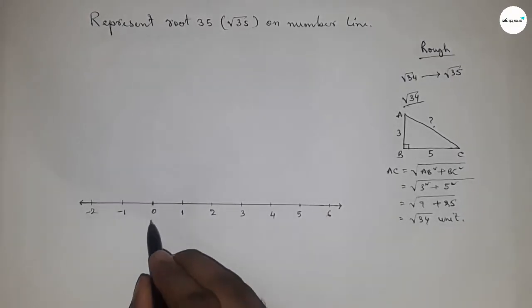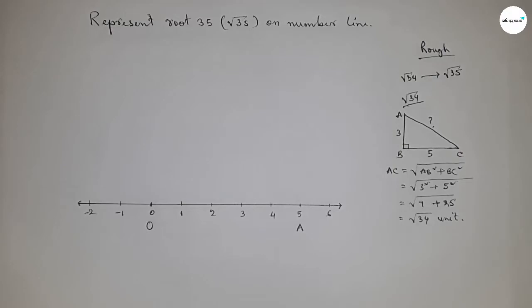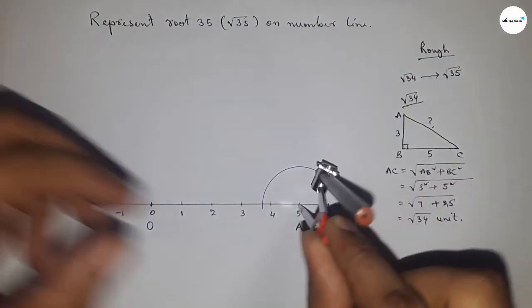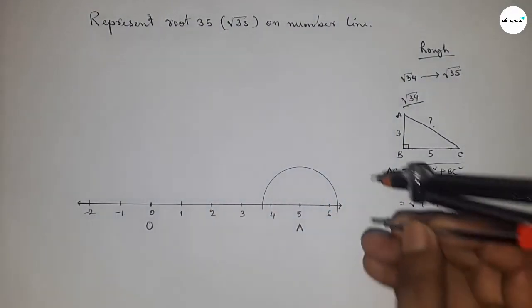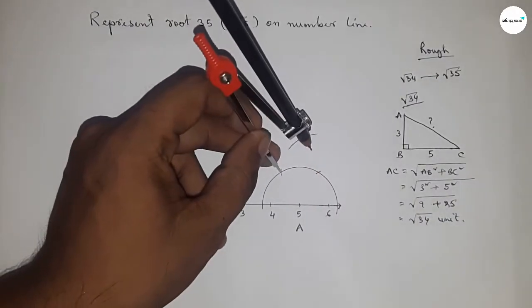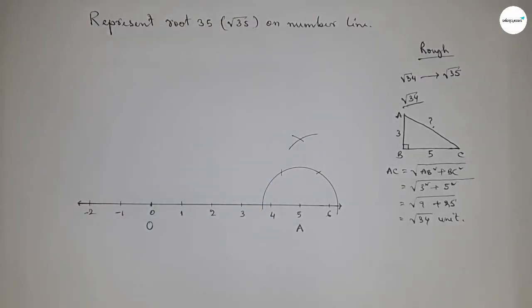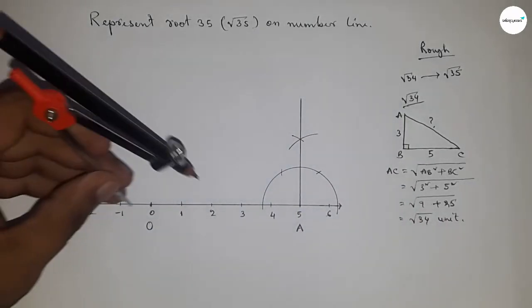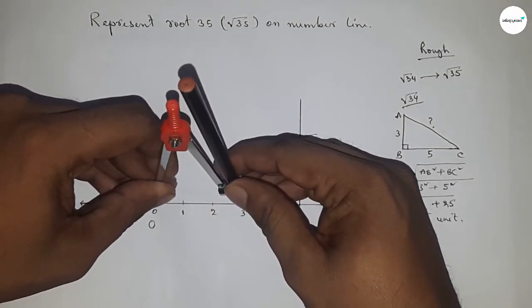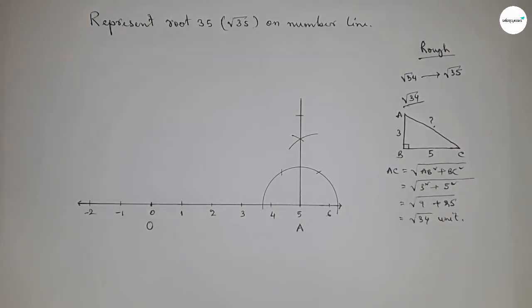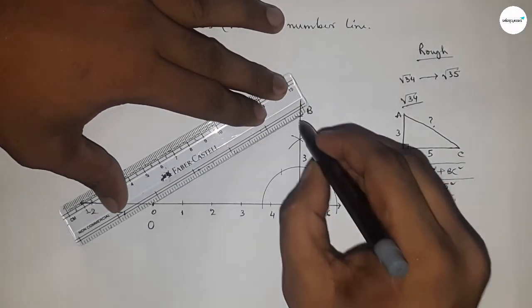Now applying this on the number line. First drawing a 90-degree angle or a perpendicular line. Taking a length and drawing an arc, then placing the compass at the same point and cutting an arc. Joining these points to form the perpendicular. Next taking the length of three units by compass, placing it here and cutting at point B. So this is three unit length, and joining this gives us root 34 units.